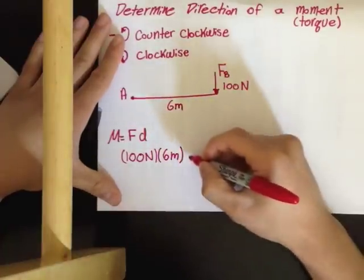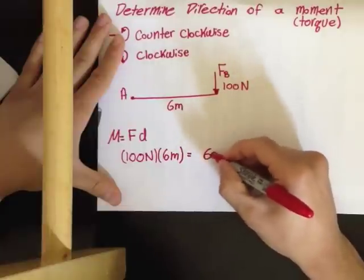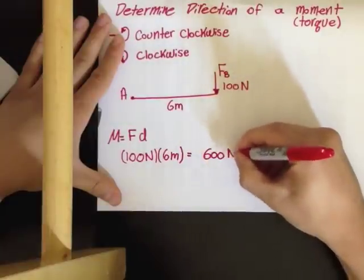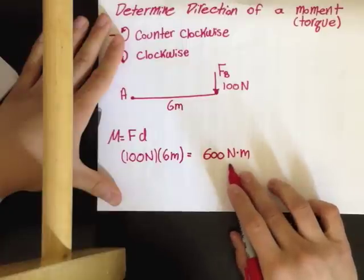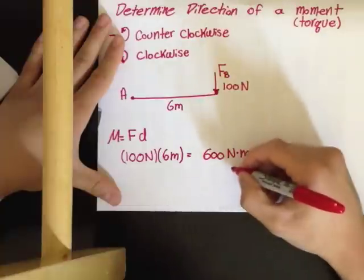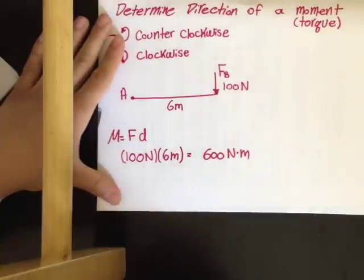If you multiply that out, that would be 600 newton meters. That, as you can obviously tell, is the unit of a moment. It's going to be a force times a length.